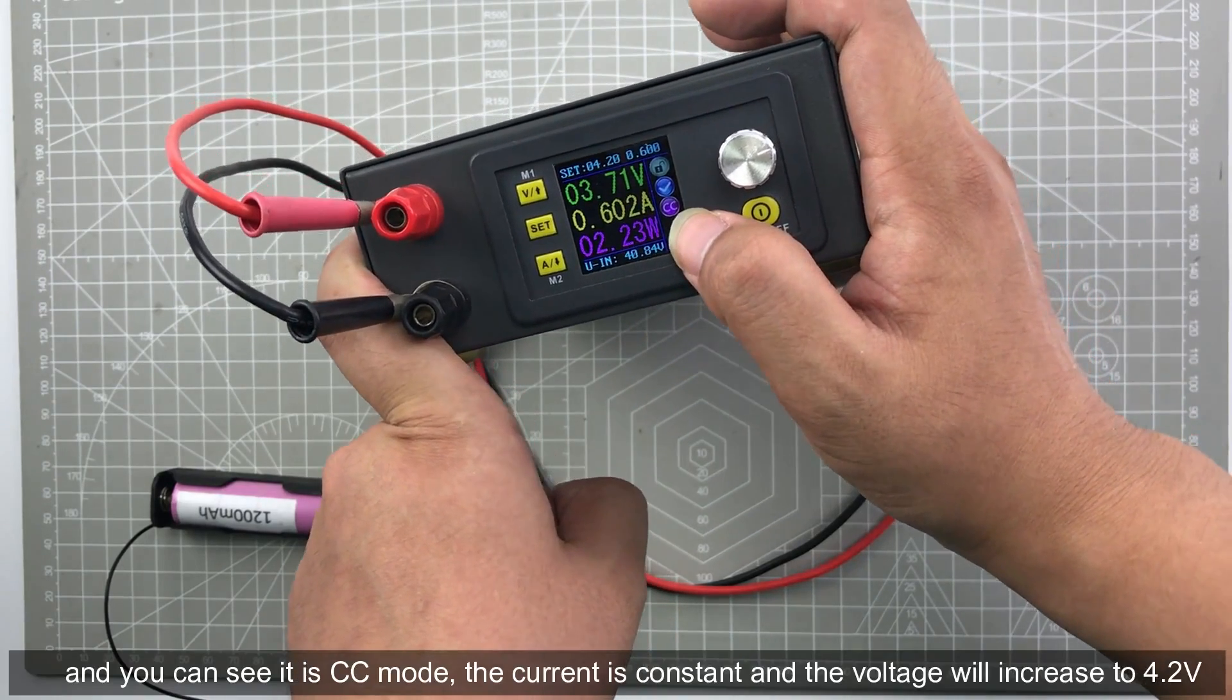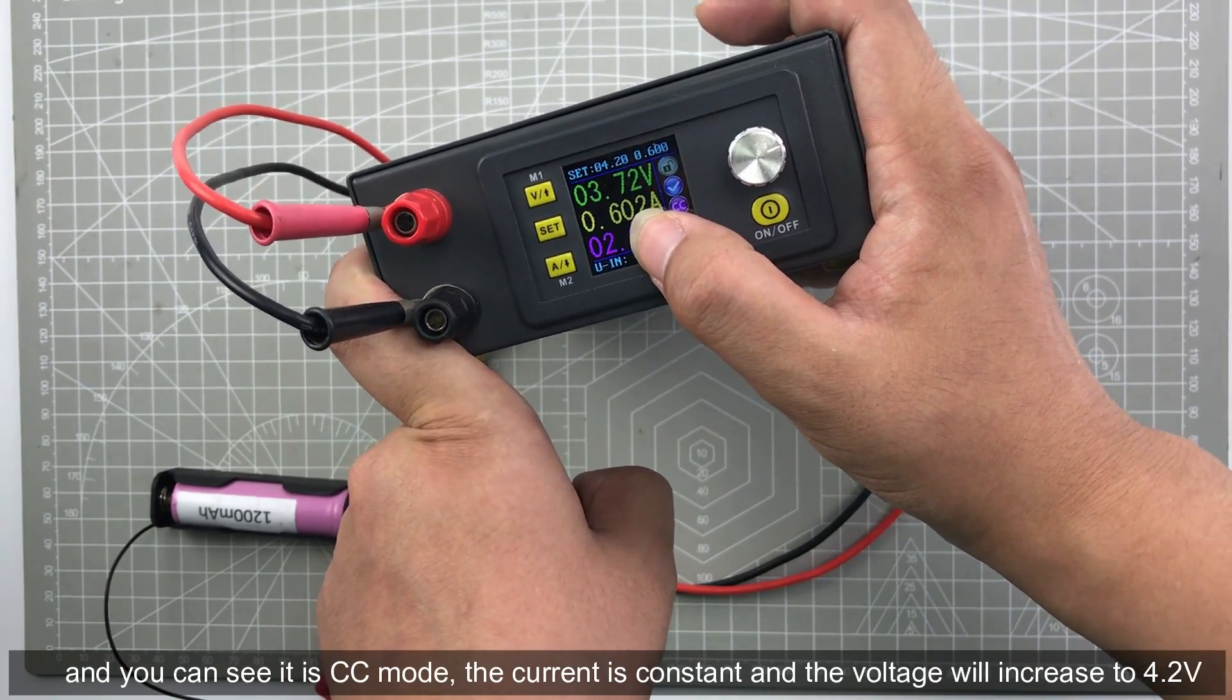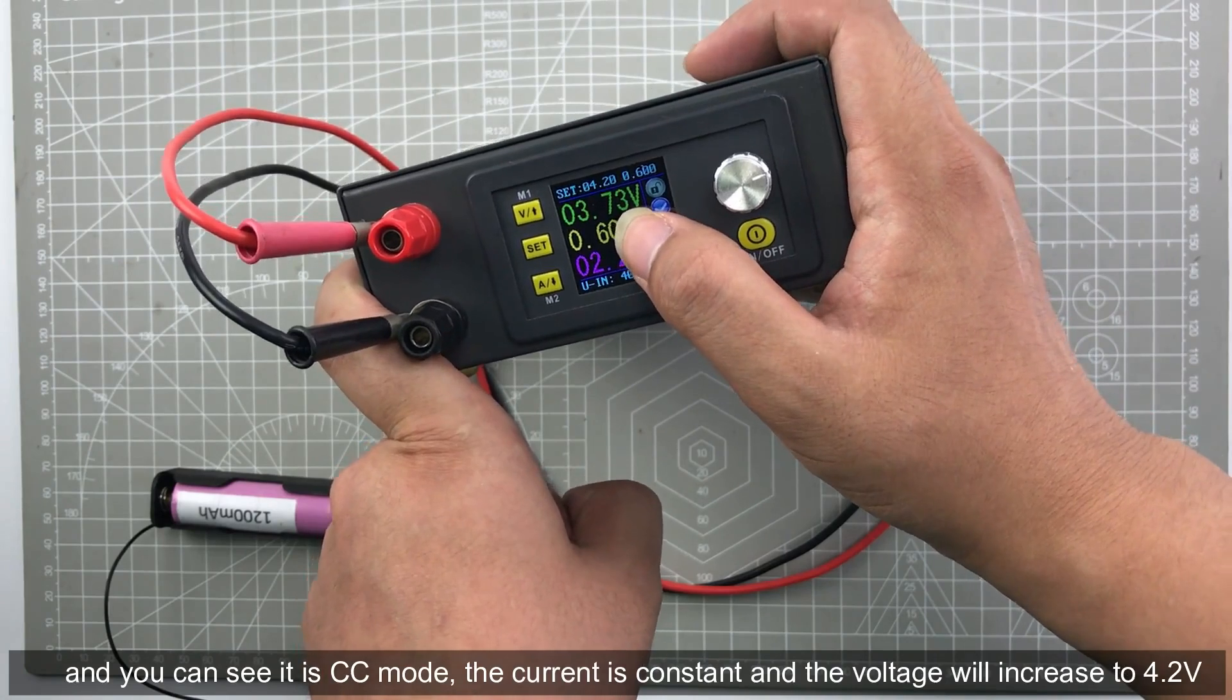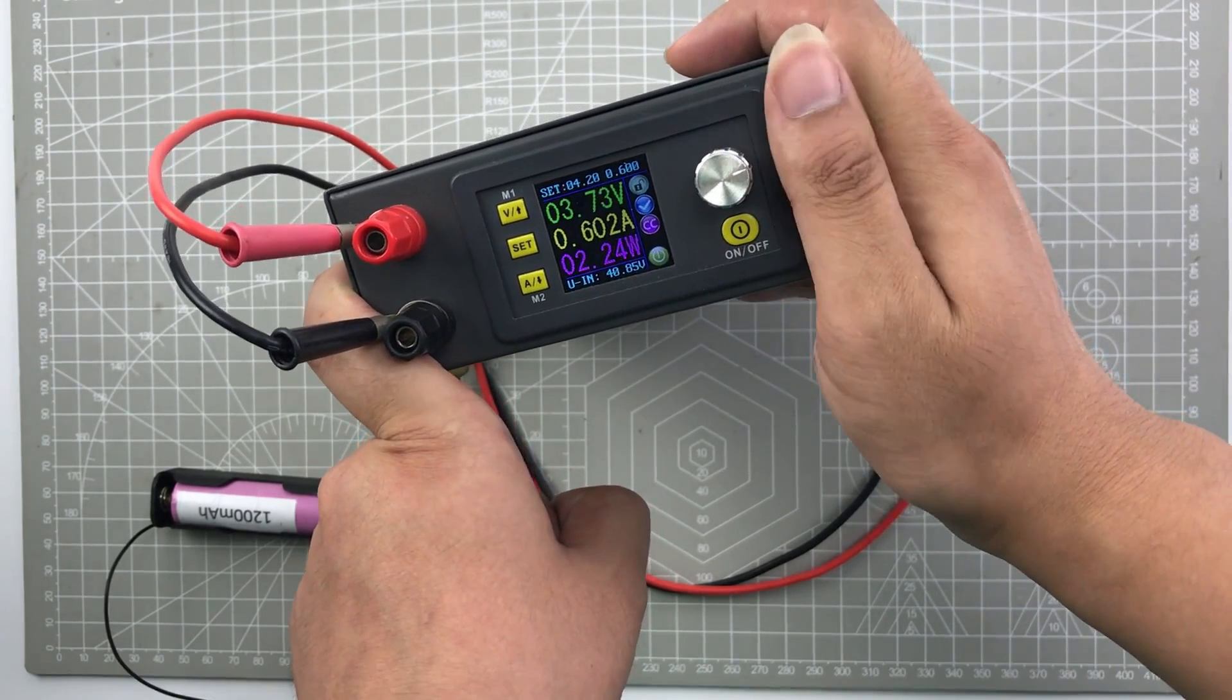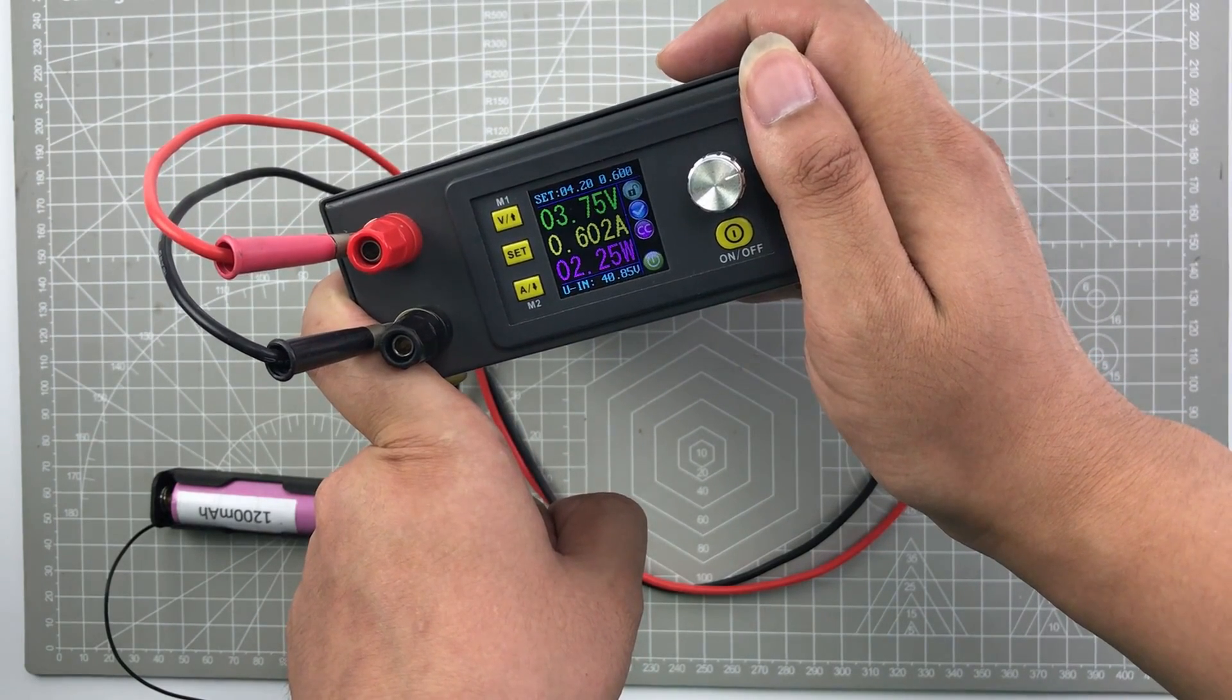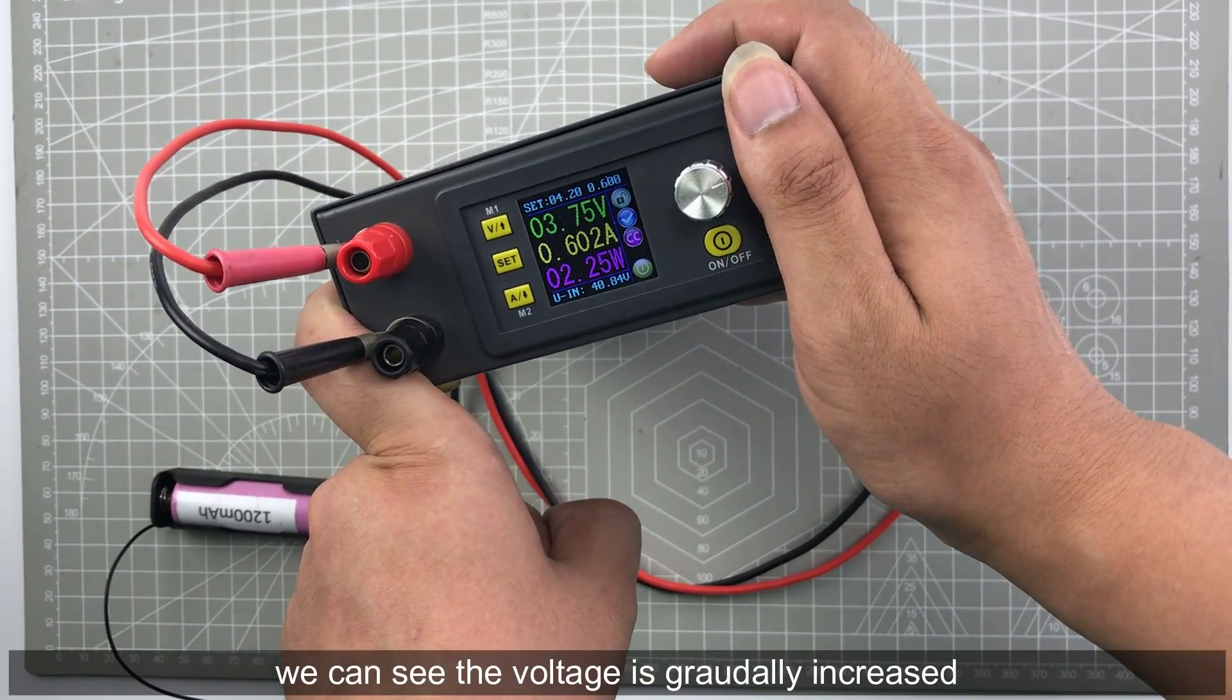Turn on the switch, and you can see it is CC mode. The current is constant, and the voltage will increase to 4.2 volts. You can see the voltage is gradually increased.